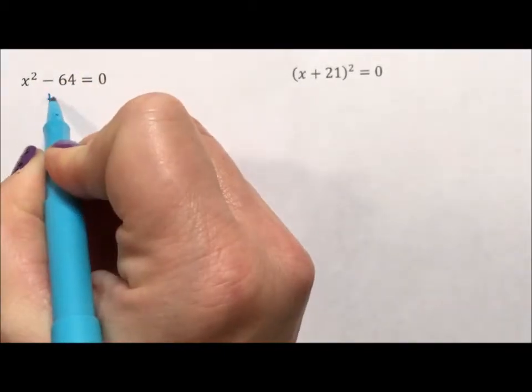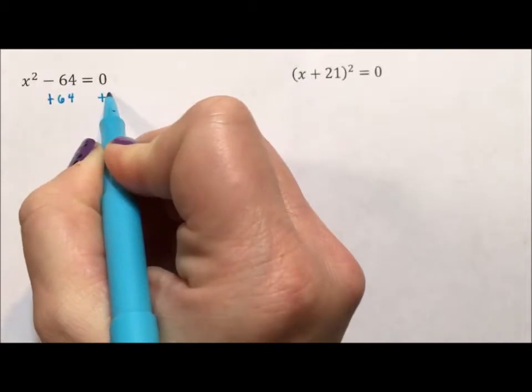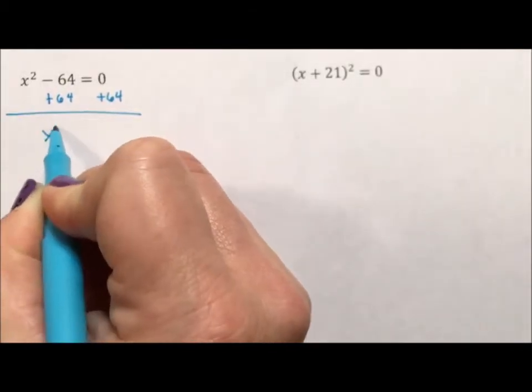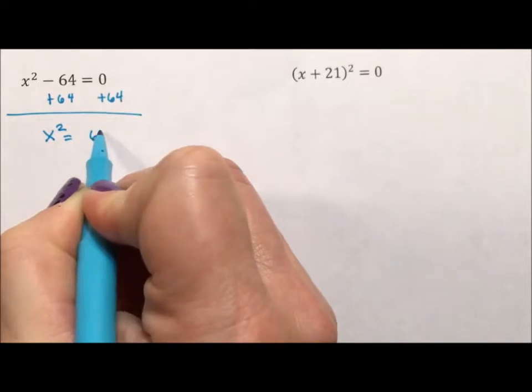So for this one, I'm going to add 64 over so that I have x squared is equal to 64. And then I'm going to take the square root.